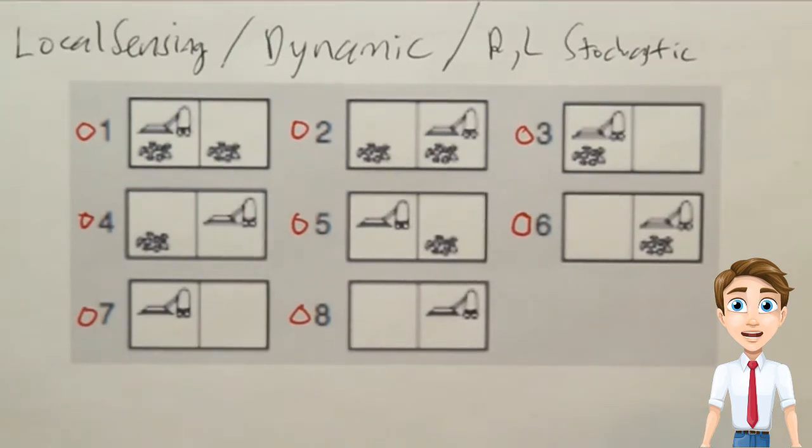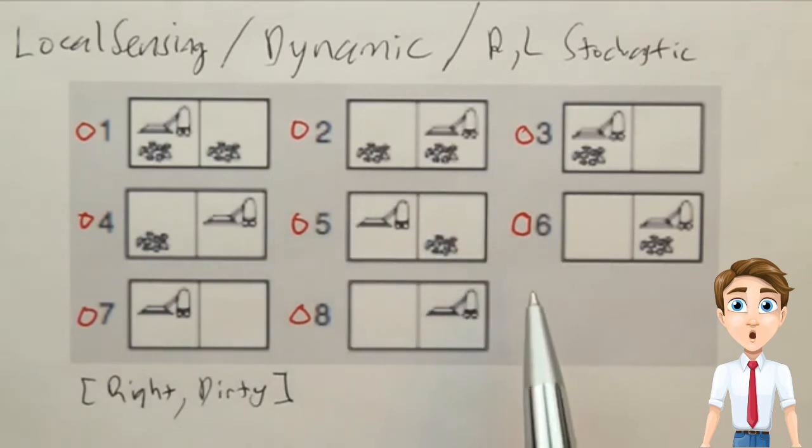Now we get a percept from the world, and we observe that we're in the right-most square, so the action worked, and that square is dirty. Now we want to update our belief state, and click on all the states that belong to the belief state now, as we update due to this percept.